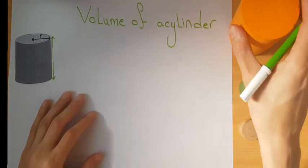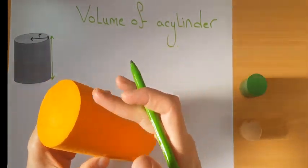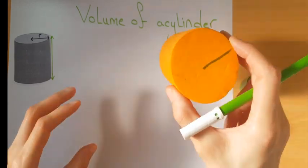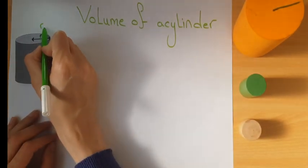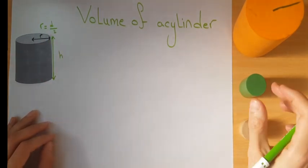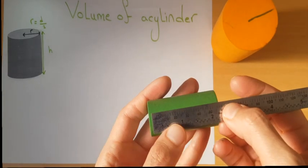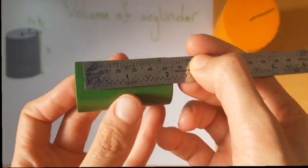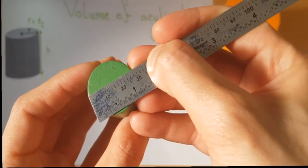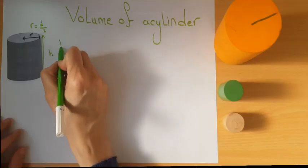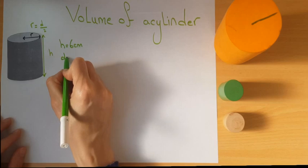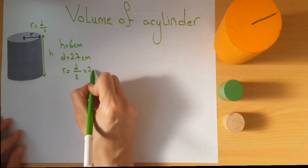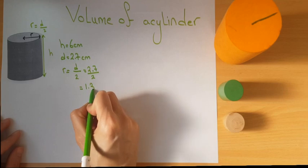Now we want to measure the volume of a cylinder. For every cylinder you will be given the height and its radius — sometimes the diameter instead. If given the diameter, the radius is diameter divided by 2. Measuring this cylinder: the height is 6 centimeters and the diameter is 2.7 centimeters, so the radius is 2.7 divided by 2, which is 1.35 centimeters.